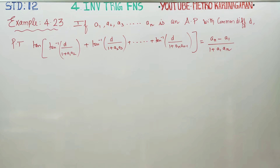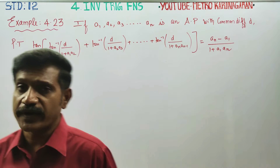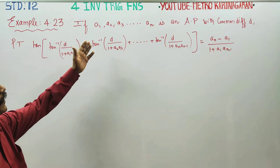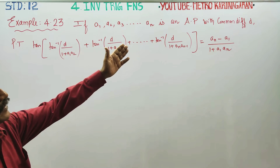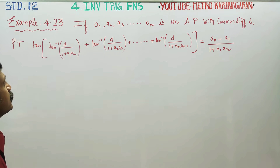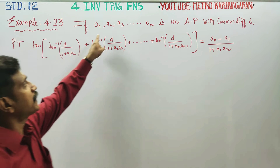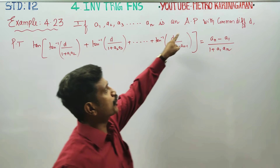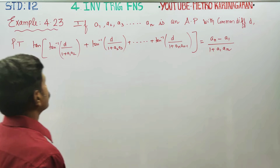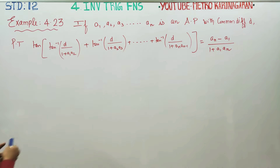Dear students, in inverse trigonometric functions, a very important sum — example 4.23. Here, a1, a2, a3 are in arithmetic progression with common difference d. We have to prove this.